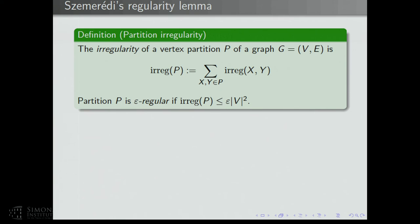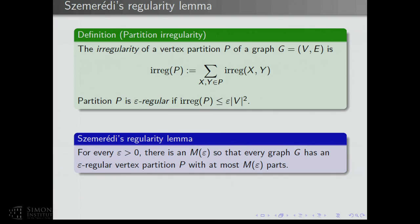It's not telling you that all the parts are epsilon-regular, but it says on average they're epsilon-regular. Now we can formally state the regularity lemma of Szemerédi: for each epsilon greater than zero, there's an M(epsilon) such that every graph G has an epsilon-regular vertex partition P with at most M(epsilon) parts.